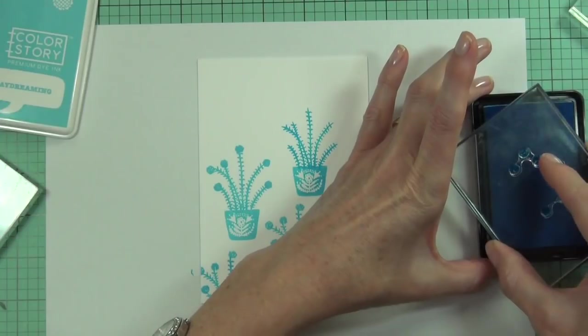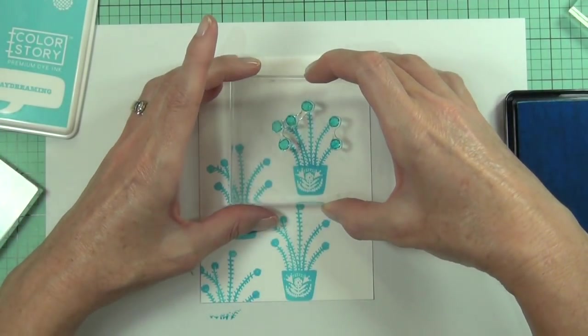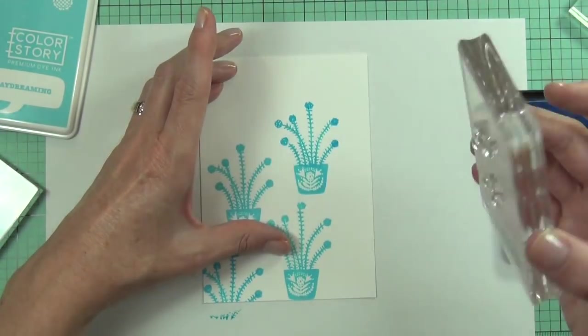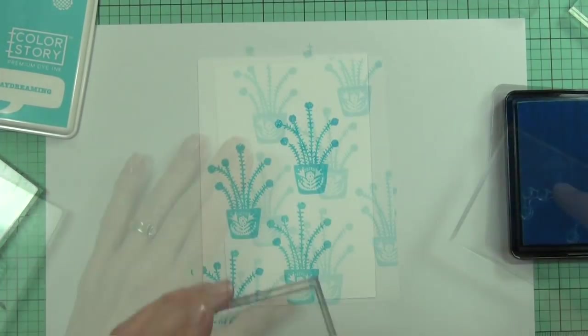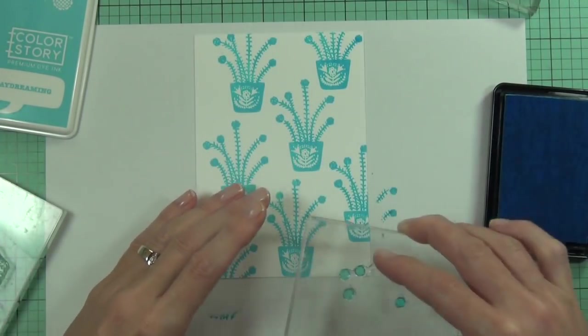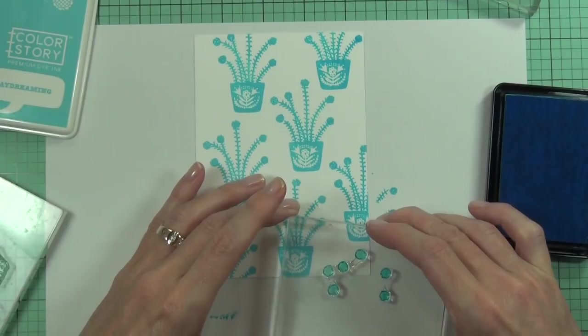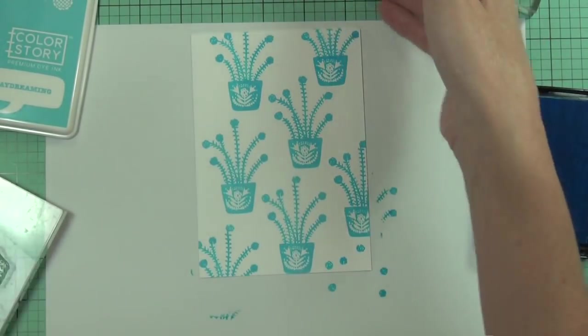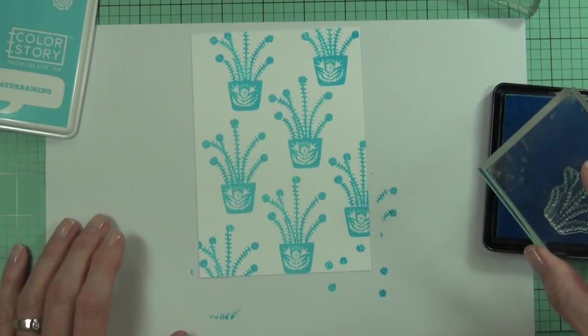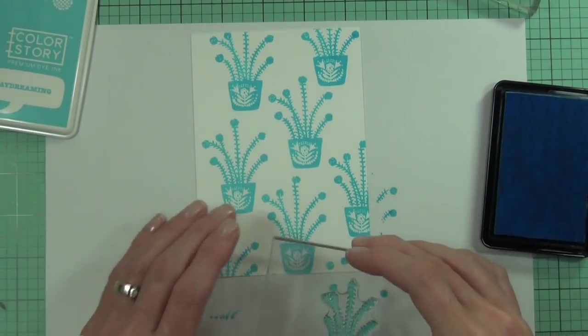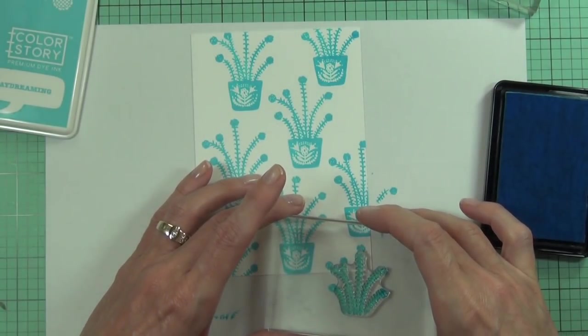Now it isn't in any set pattern here; it's just me playing with the stamps and then making sure that I stamp some of the images off the edges of the cardstock, as well as fill in the gaps with what looks like the edge of the image as well.